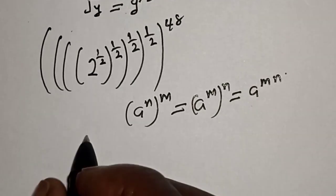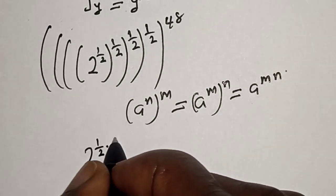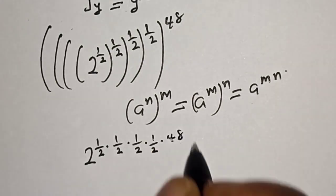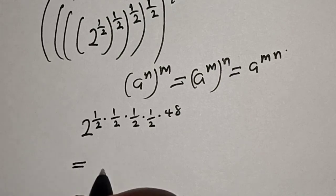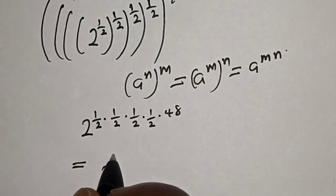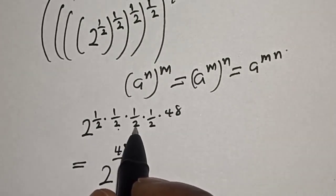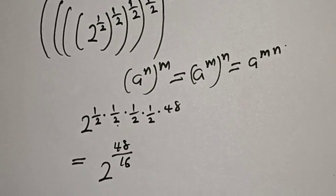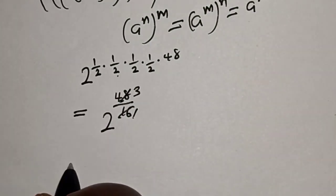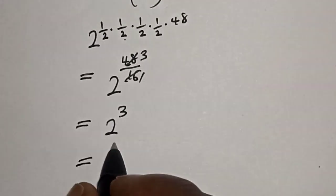Now, this can be written as 2 raised to power 1 over 2. If you multiply 48 by 1 over 2, raised to power 1 over 2, this is equal to 2 raised to power 3. Dividing through, this is equal to 2 raised to power 3, and 2 raised to power 3 is equal to 8.